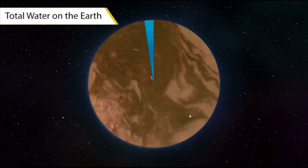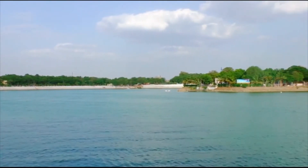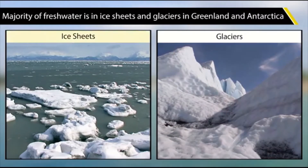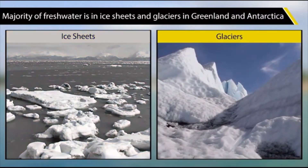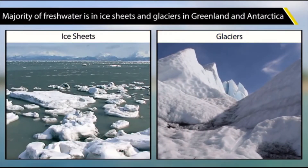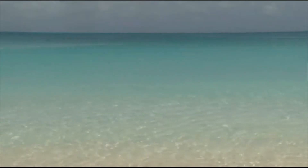Additionally, all fresh water resources are not easily accessible. For example, the majority of fresh water takes the form of ice sheets and glaciers in Greenland and Antarctica, which are not easily accessible to human beings. Therefore, even though such a large part of the earth's surface is covered by water, only one percent of the fresh water can actually be used as drinking water. This is why fresh water is a very precious resource.